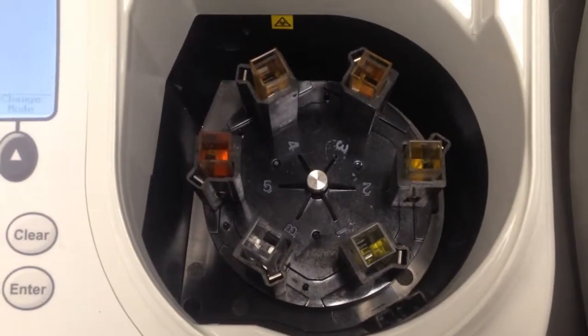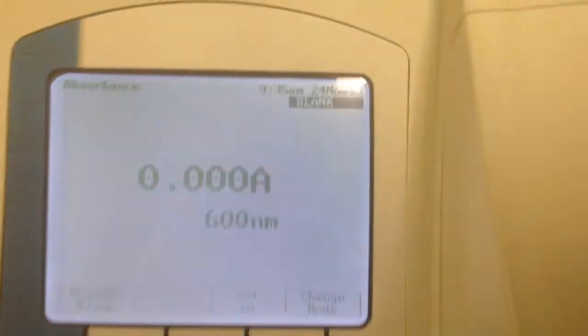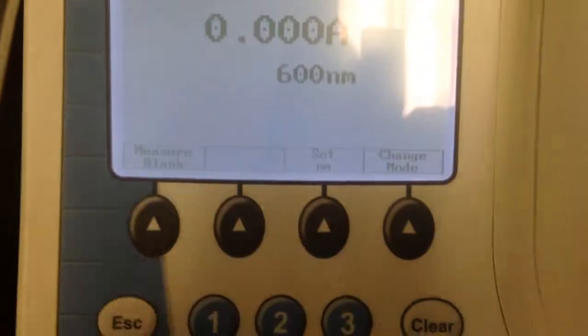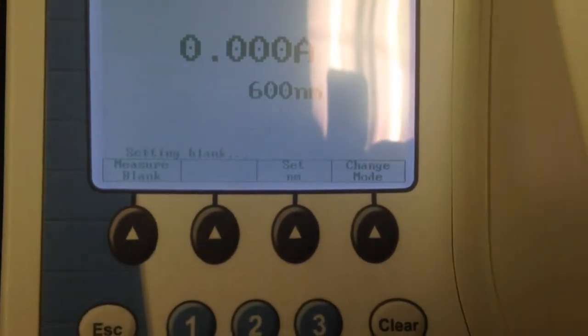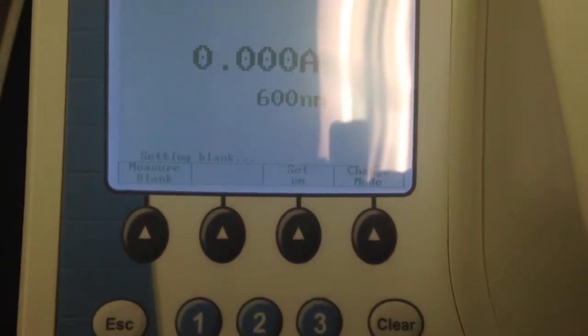Once all of your samples are loaded, select the blank sample and measure blank. This will zero out the spec to give you a more accurate absorbance of your samples.